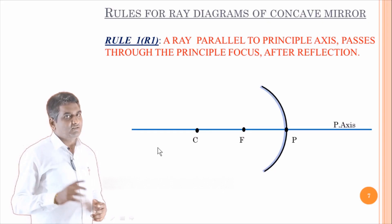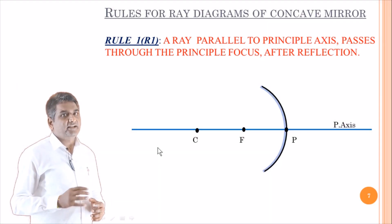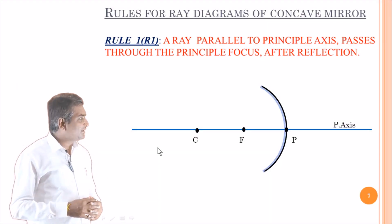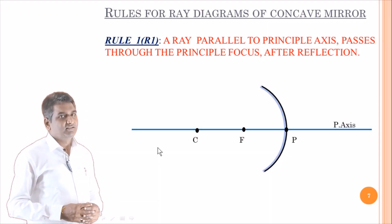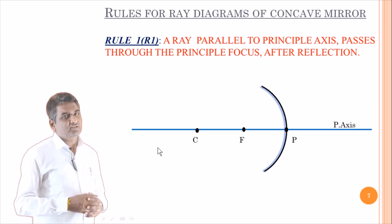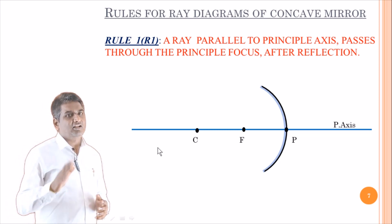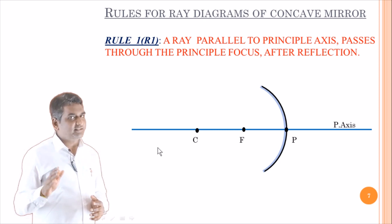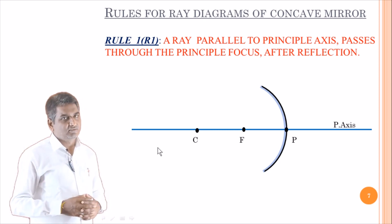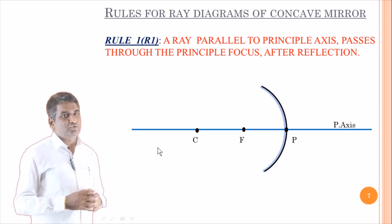Now we will discuss about the rules for ray diagrams of concave mirrors. We have four rules — R1, R2, R3, and R4. Let us discuss them individually.